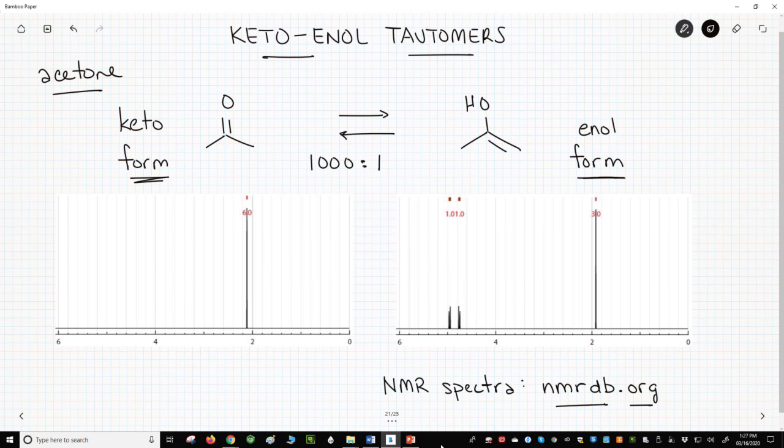You can see that the keto form spectrum shows just one signal from the two identical methyl groups. The enol form shows multiple signals, including alkene signals around 5 ppm.